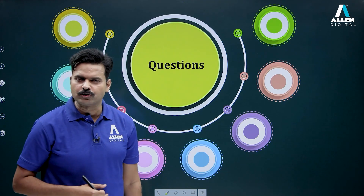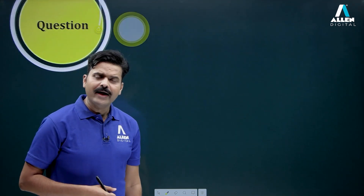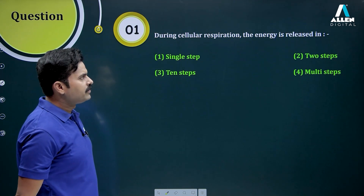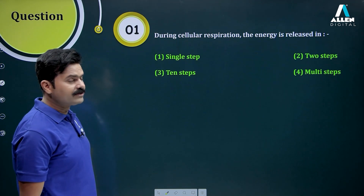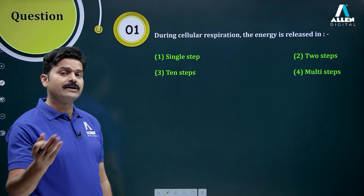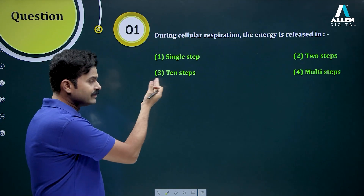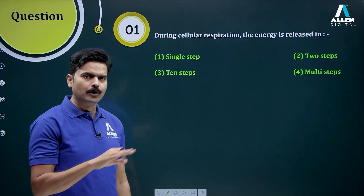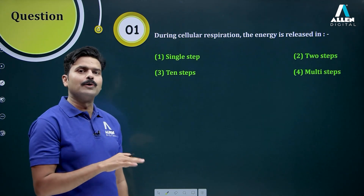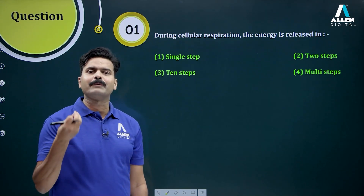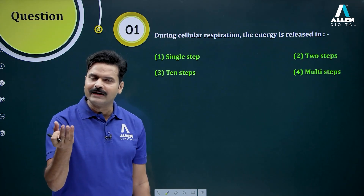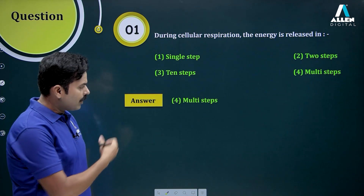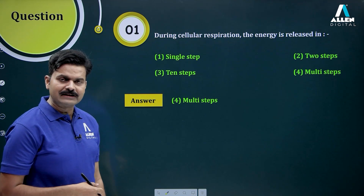Now let's check your understanding. Question number one: during cellular respiration, the energy is released in — (1) a single step, (2) two steps, (3) ten steps, or (4) multiple steps? The answer is option number four — multiple steps. Respiration is a multi-step process, as we discussed.